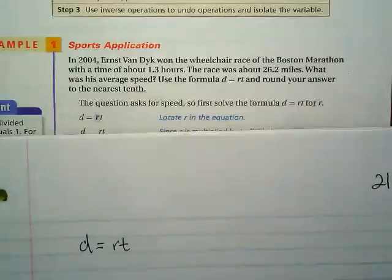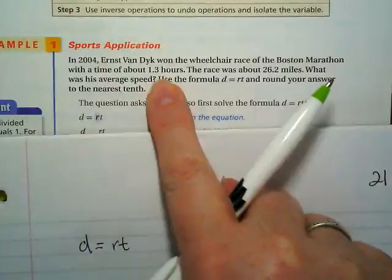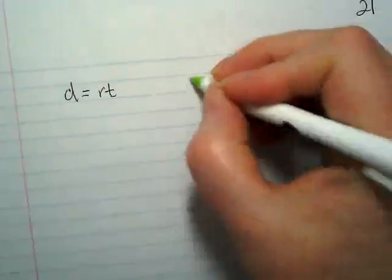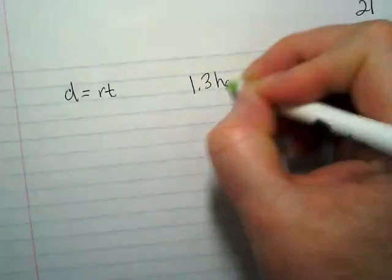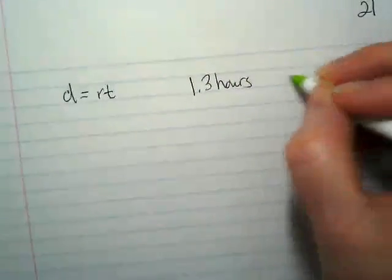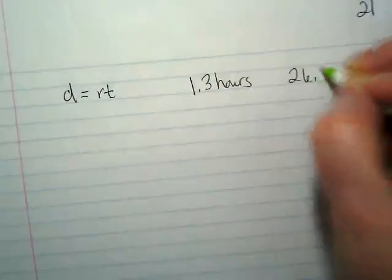They gave us two numbers. They gave us his hours. He was at about 1.3 hours. And they gave us the distance of a marathon, which is about 26.2 miles.